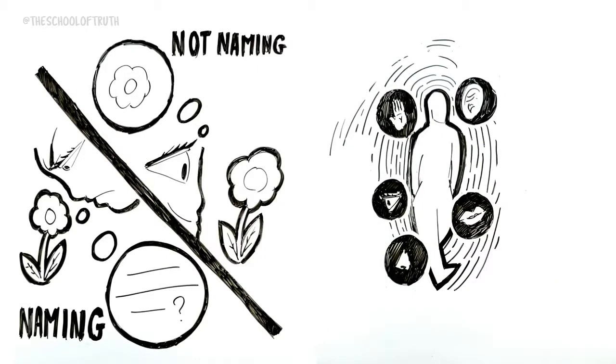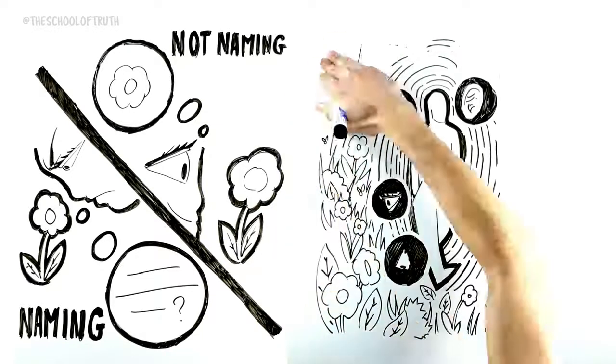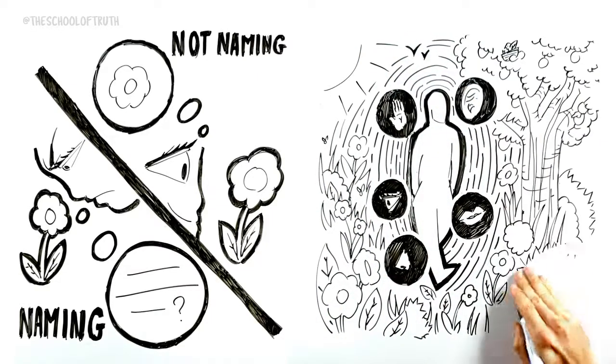Practice sense perceptions without this compulsive interference of naming what you're perceiving. Oh, that's a beautiful flower. I wonder what it's called. I don't know what it's called. Oh, that helps. I can be free of thinking. If I know what it's called, I can say, oh, that's such and such and then drop that.